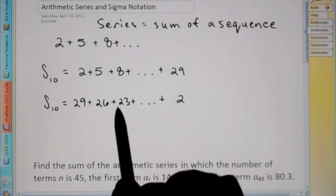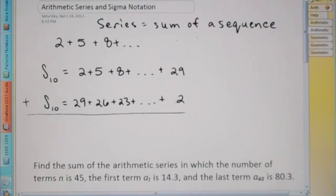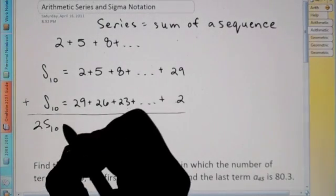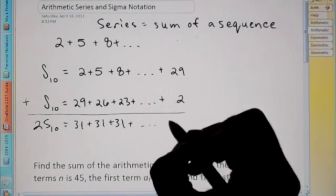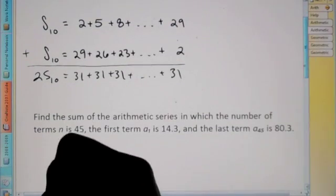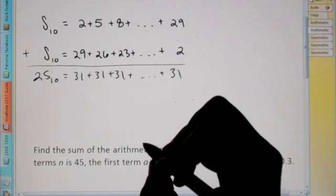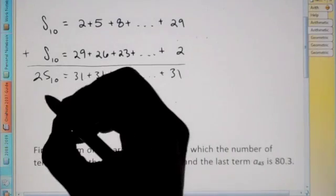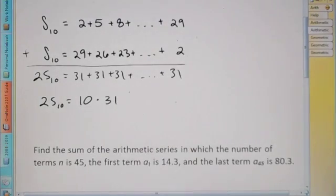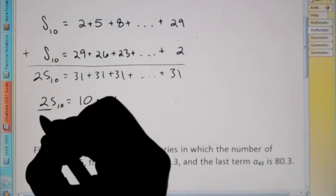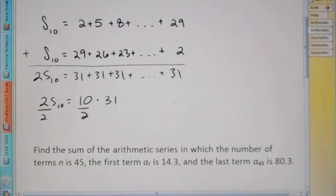Starting at 29 going back down to 26, 23, all the way to 2. This is basically the same exact value. Now if I were to add these two lines, adding down, I would get 2·S₁₀ is equal to 31 plus 31 plus 31 plus dot dot dot plus 31. These are ten terms here. We could say 2·S₁₀ is equal to 10 times 31 because there are ten 31s. And now to get S by itself, we can divide by 2, and I can put the 2 only underneath the 10.